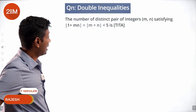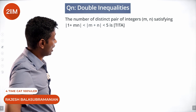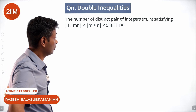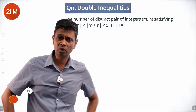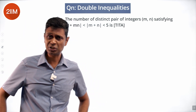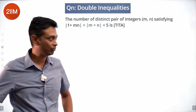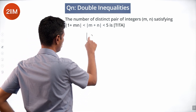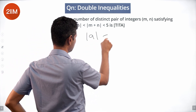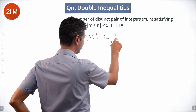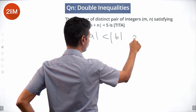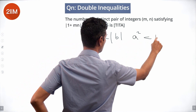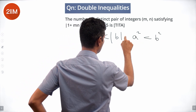Find the number of distinct pairs of integers m, n satisfying this inequality. Wonderful question — I really struggled with this one. First thing to know: |a| < |b| is the same as saying a² < b². One implies the other — that's the first step.